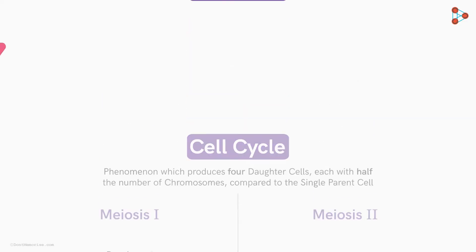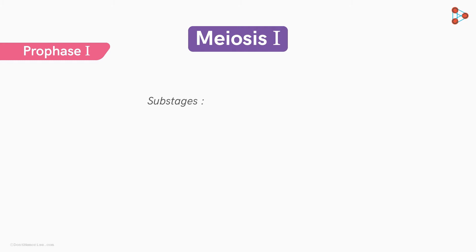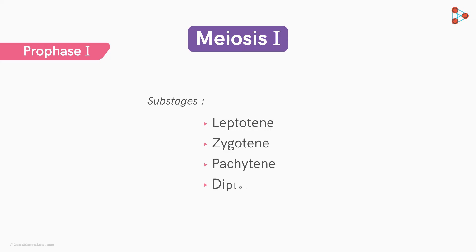Let's begin with prophase I — it's the longest phase of meiosis I. The phase is further divided into 5 substages: leptotene, zygotene, pachytene, diplotene, and diakinesis.